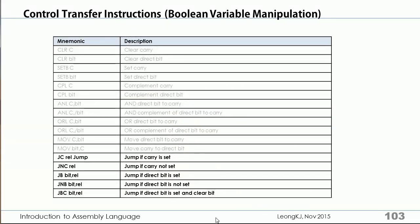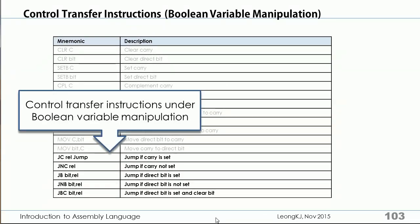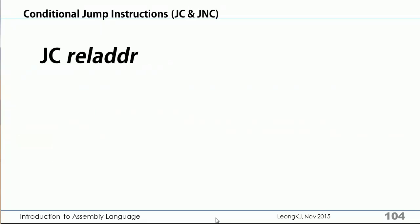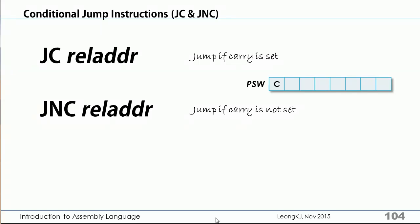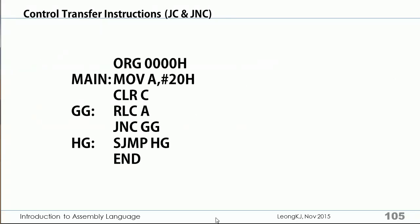Some conditional jump instructions are classified under the boolean variable manipulation instructions. JC jumps if the carry is set — carry refers to the carry bit in the PSW register. JNC jumps if carry is not set. The JNC instruction causes a program jump if carry is not set (i.e., carry is zero); otherwise, the program continues executing the next instruction.